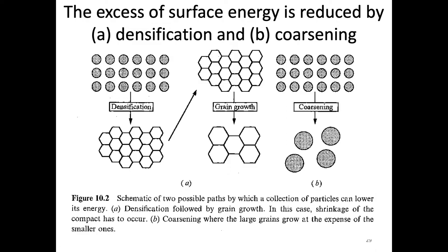The idea behind both scenarios is that we're trying to reduce surface energy. If we densify, we form grain boundaries and grow to larger size grains, which reduces surface energy because we no longer have a free surface — we have a grain boundary. In the coarsening case, we're not eliminating surfaces, but we reduce surface energy by making larger and larger particles. So these are two routes to reduce excess surface energy.